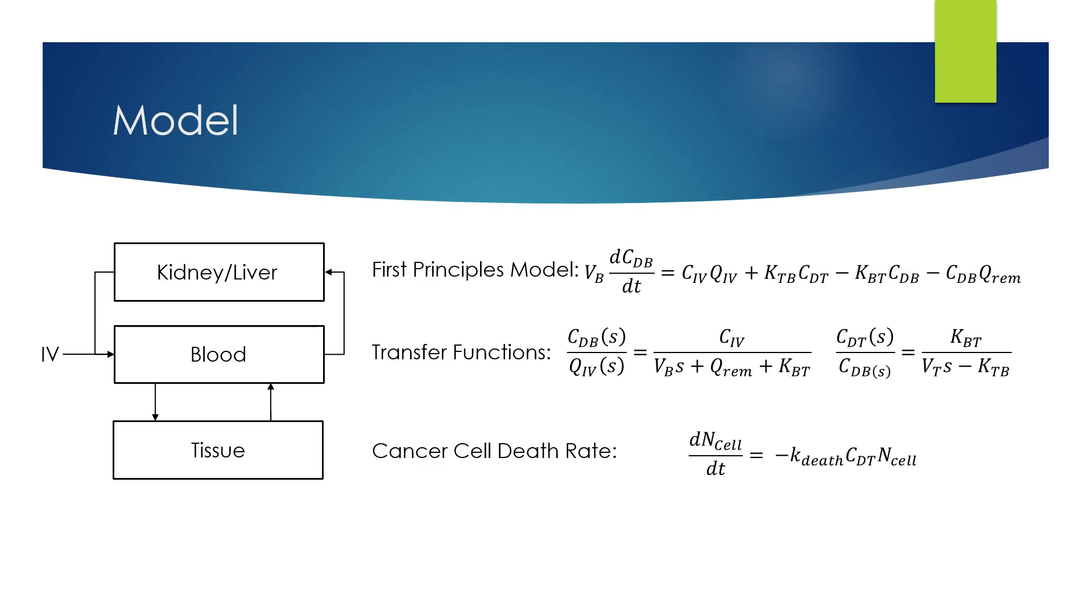So in order to do this we need to create a model. Our model is based on a two compartment model used commonly in pharmacokinetics, where the blood and the tissue are the two compartments. And so the derivation of our first principles model, we have our accumulation term here, and then we have our in values coming in and values going out.